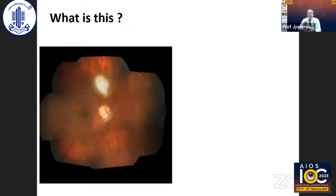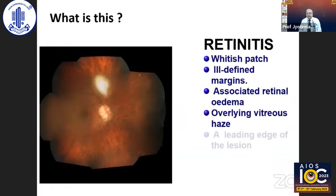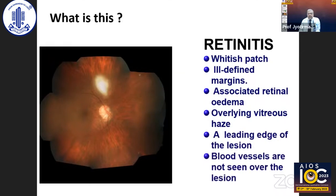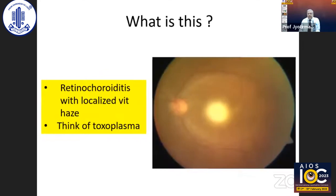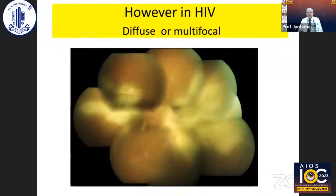Here is a lesion showing retinitis — a fluffy white lesion, whitish patch with ill-defined margin, associated retinal edema, overlying vitreous cells, a leading edge to the lesion, and blood vessels cannot be traced over the lesion. This retinitis is almost always infective. When you see such retinochoroiditis with localized vitreous cells, the phenotype tells you this is of toxoplasma origin, and it should be treated with anti-toxoplasma treatment with oral steroids started 48 hours after. In atypical cases — such as this HIV-positive patient with diffuse retinitis — PCR was positive for toxoplasma.